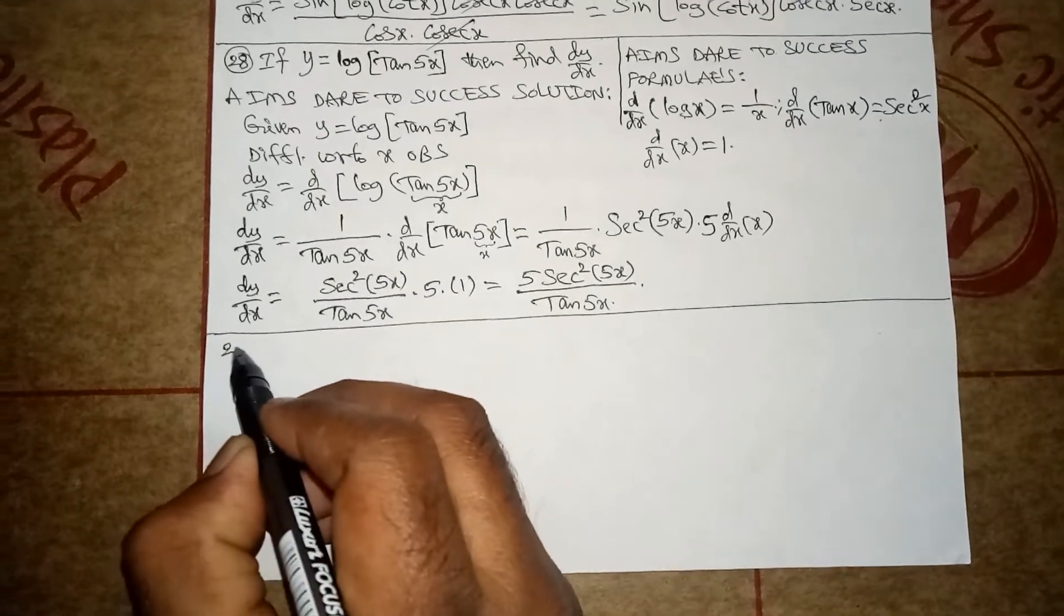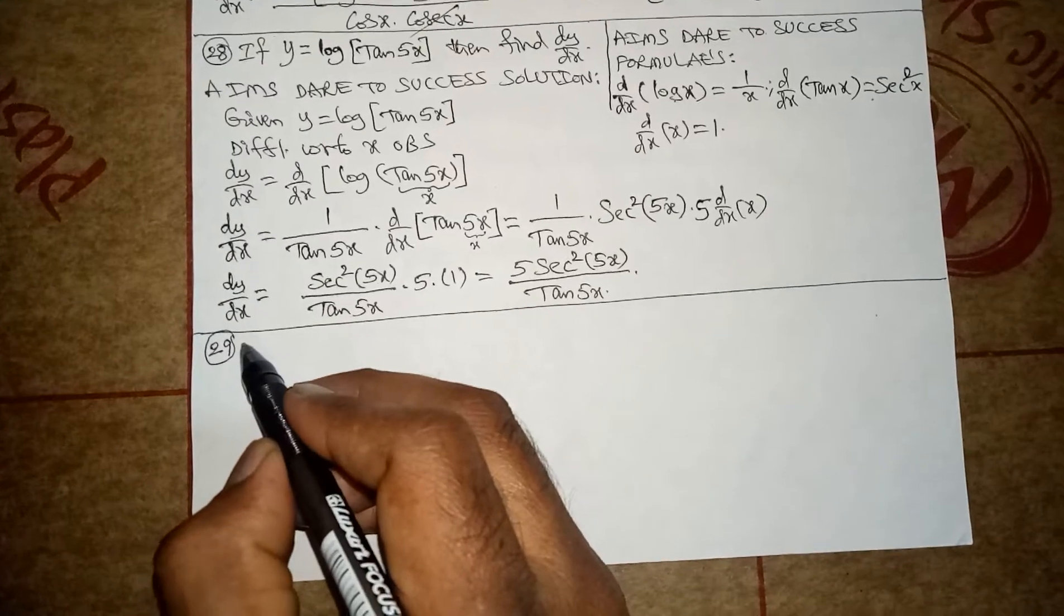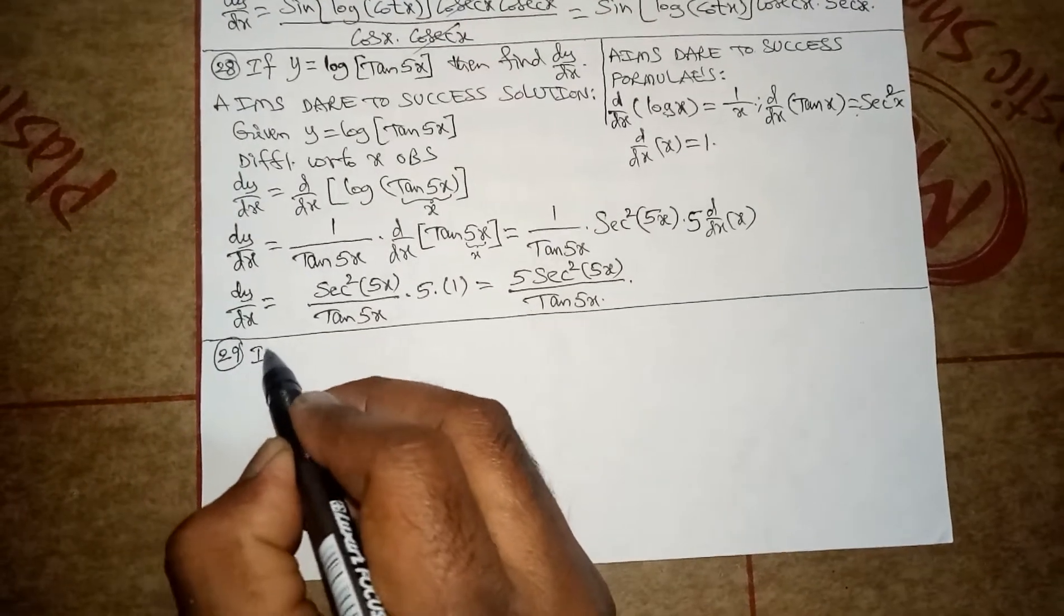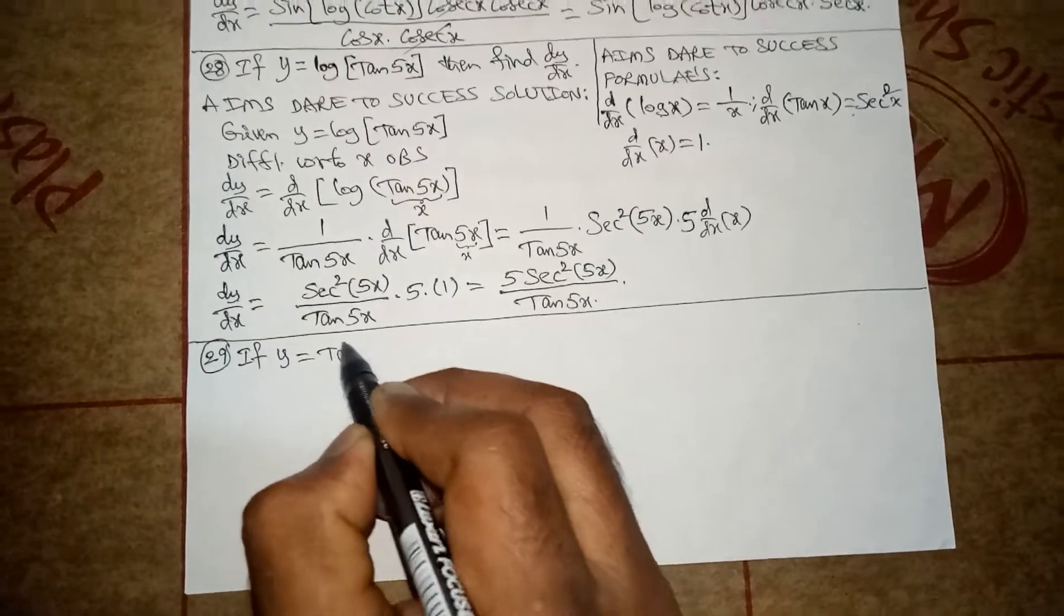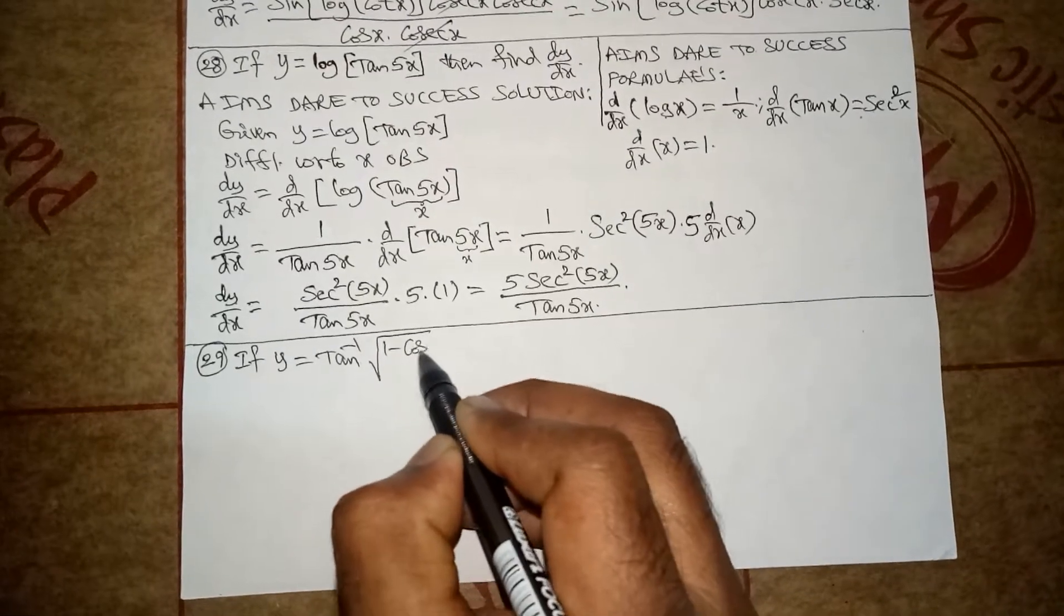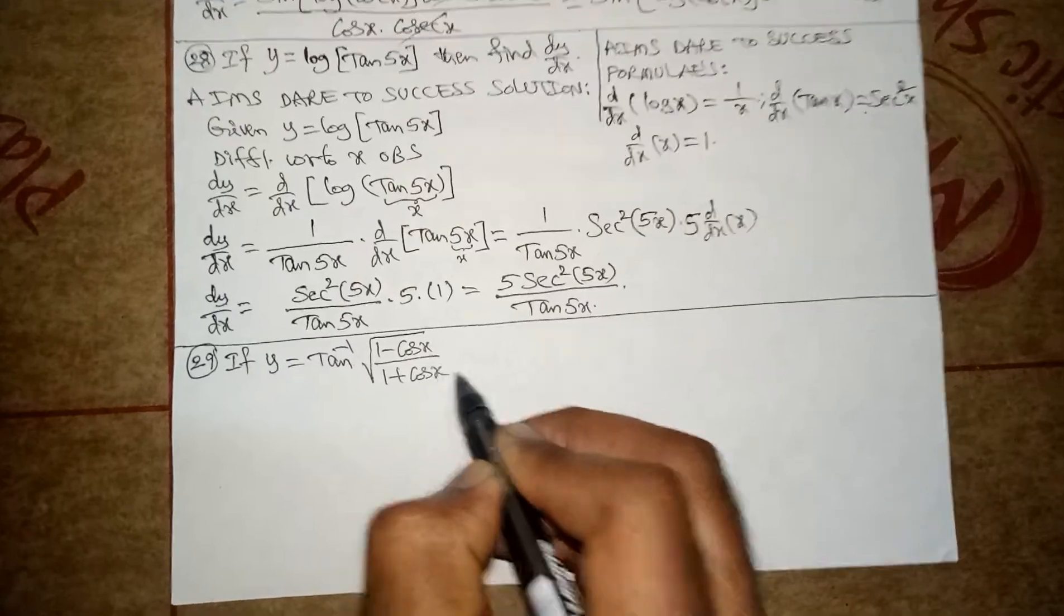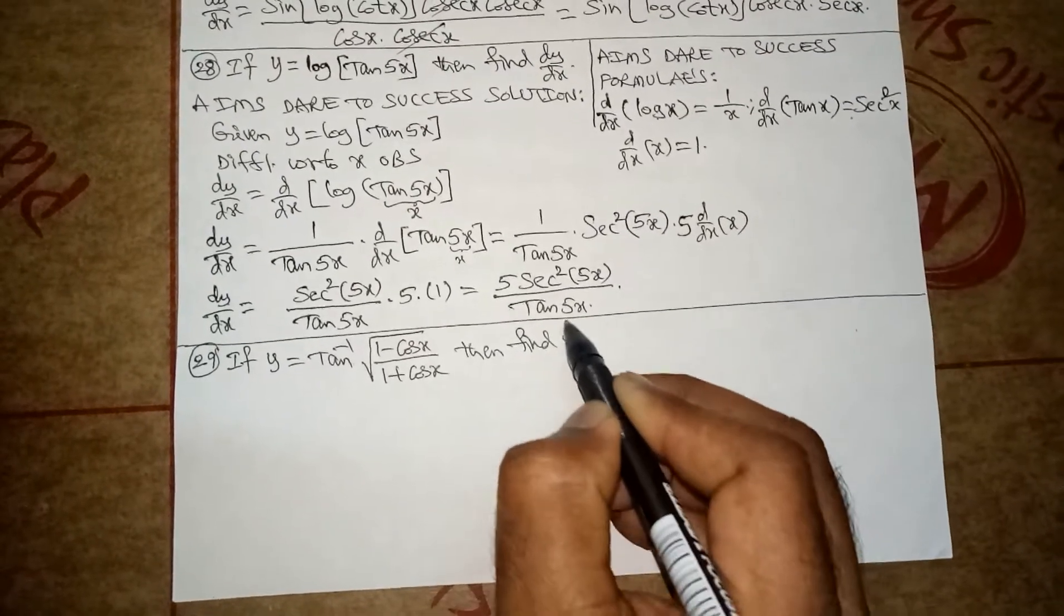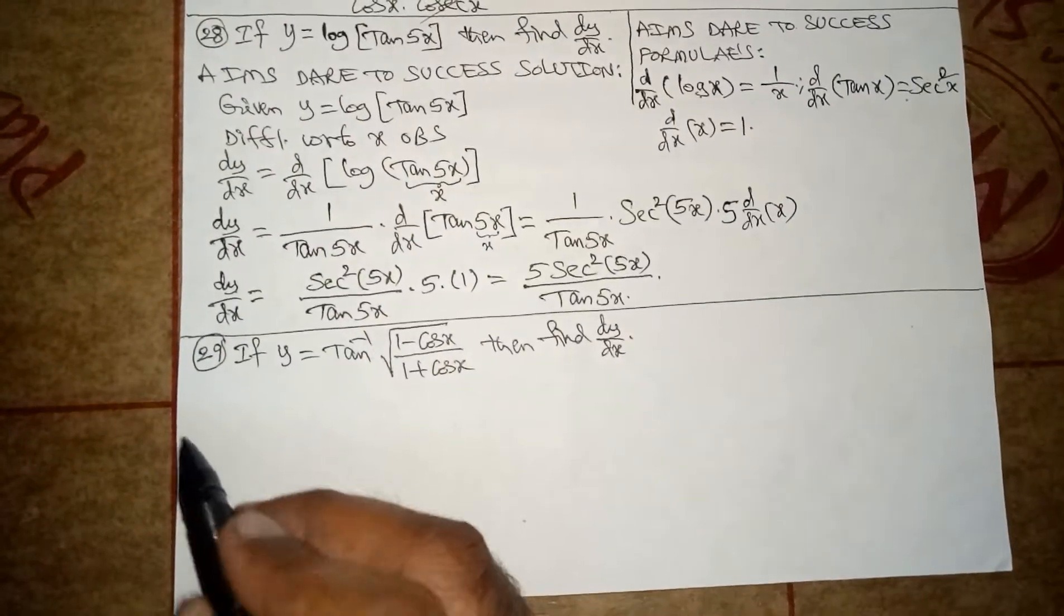Hi my dear friends, namaste. Today we are discussing minus 1b differentiation. The question is: if y is equal to tan inverse of root[(1 minus cos x) by (1 plus cos x)], then find dy by dx.